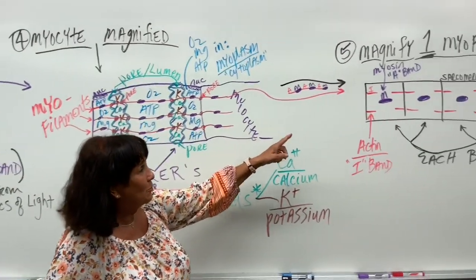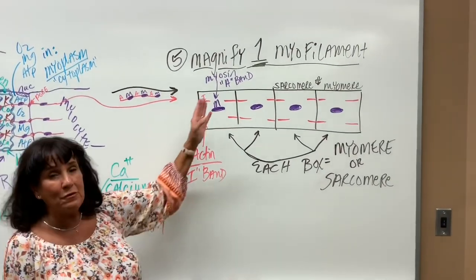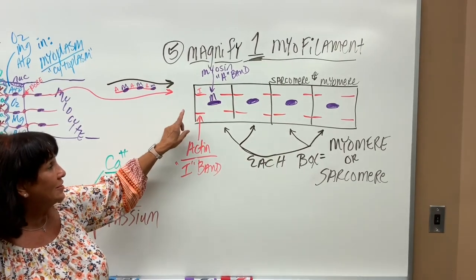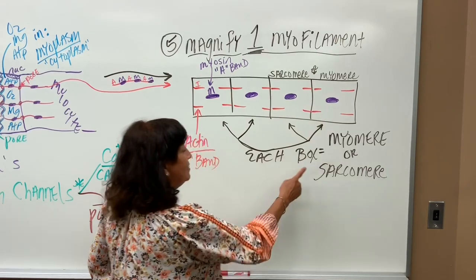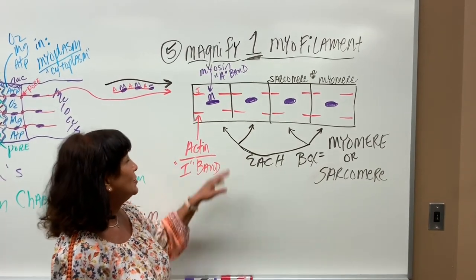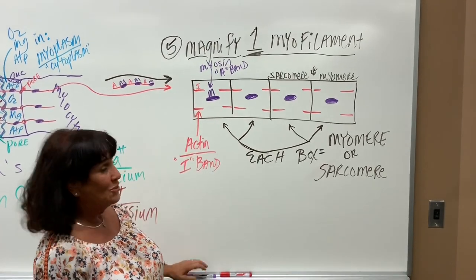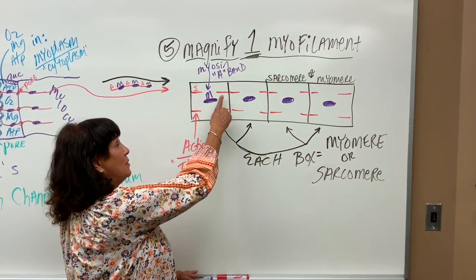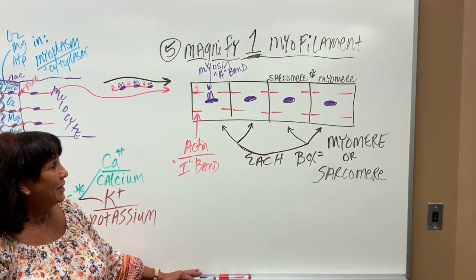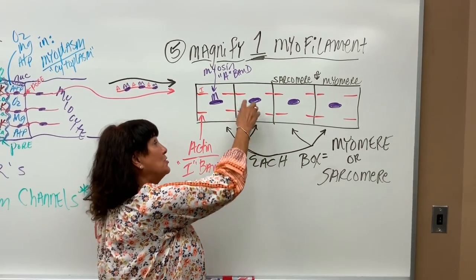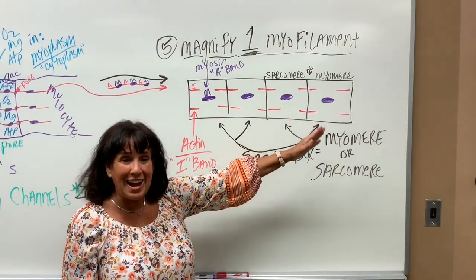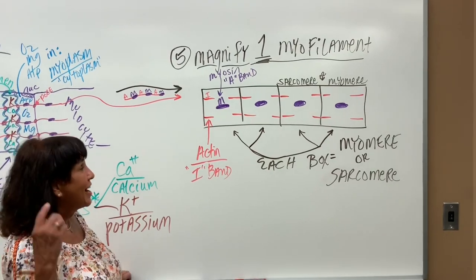Before we actually contract a cell, what does one myofilament look like on extremely high power? One myofilament looks like a series of little boxes, and the name of each box is called a myomere or sarcomere - those words are used interchangeably. Each box has actin and myosin in it. There are four thin pieces of actin and one big chunk of myosin dead center. This pattern repeats itself the entire length of the myofilament.